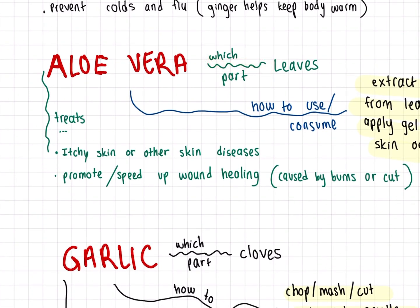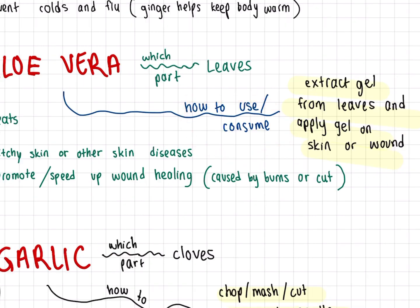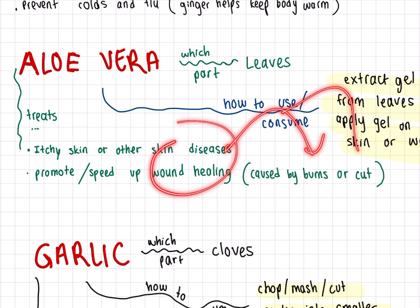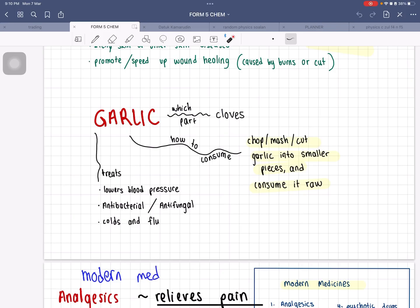For aloe vera, it is the leaf part that helps us. You extract the gel from the leaves and apply it on the skin or onto a wound. It treats skin problems like itchy skin or other skin diseases, and it speeds up wound healing caused by burns or cuts.